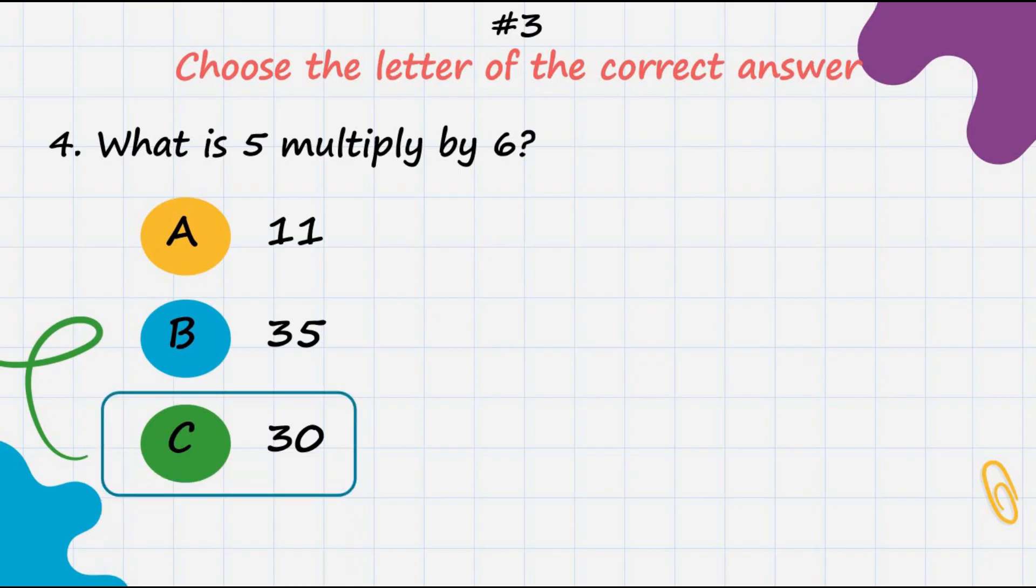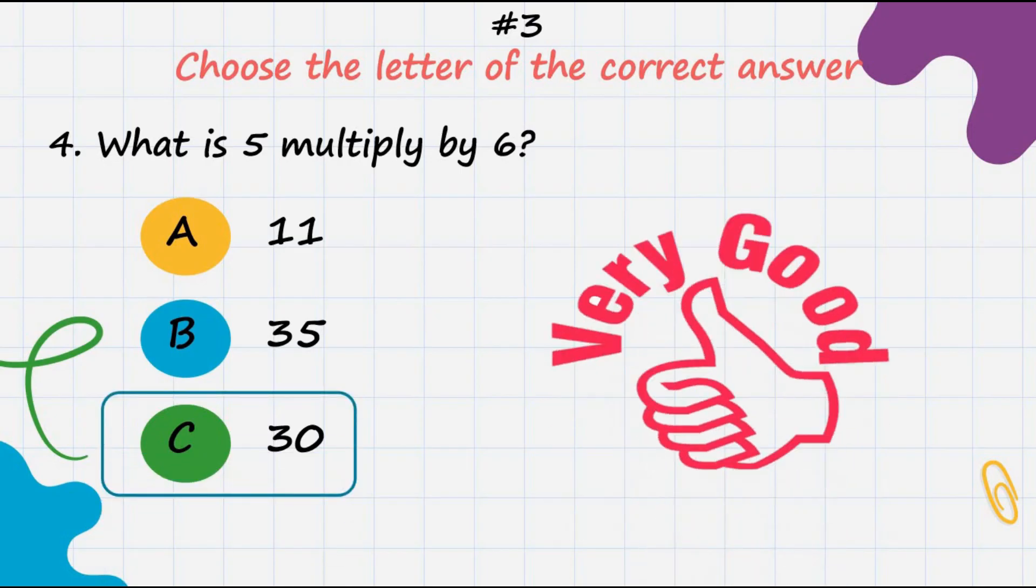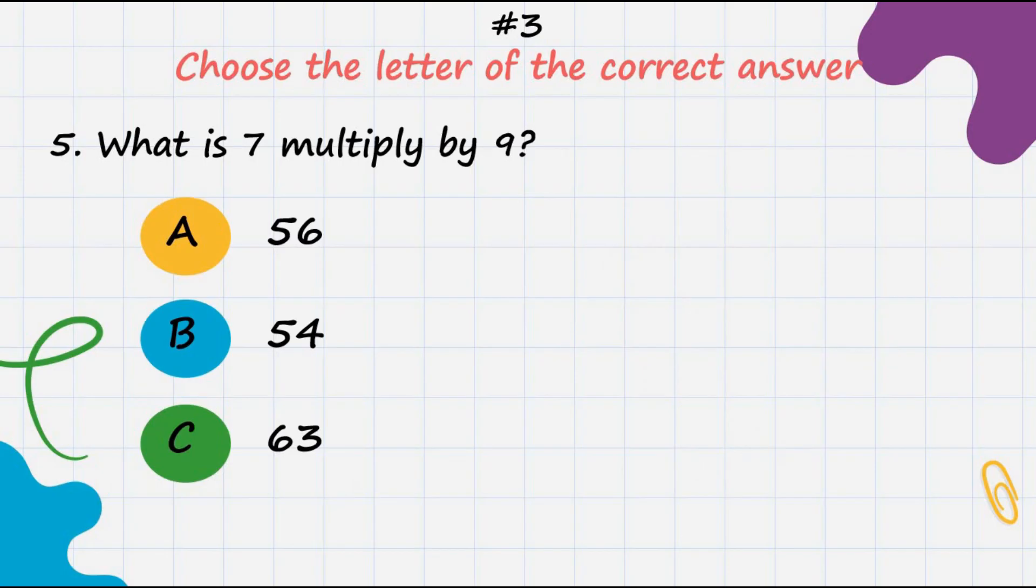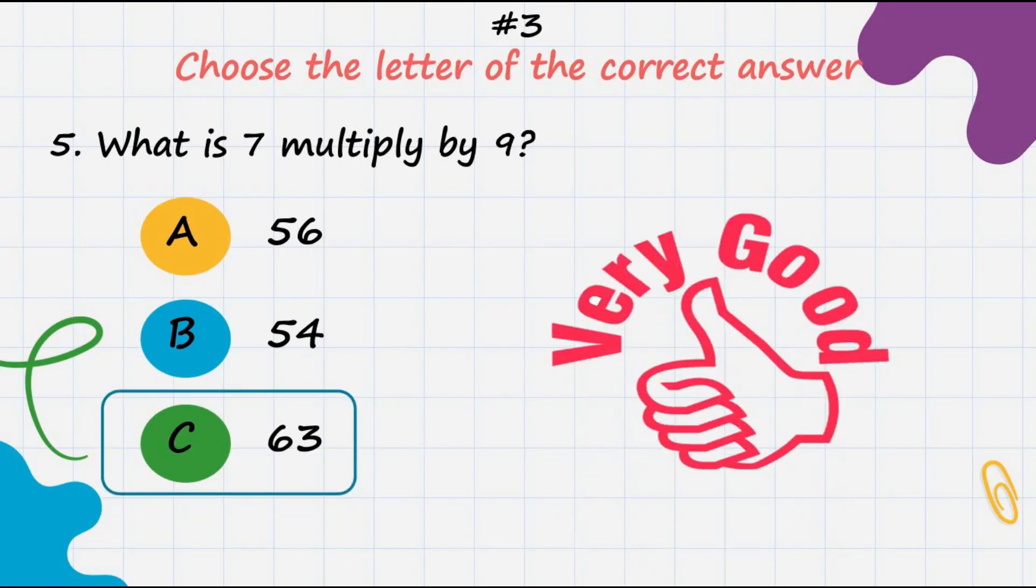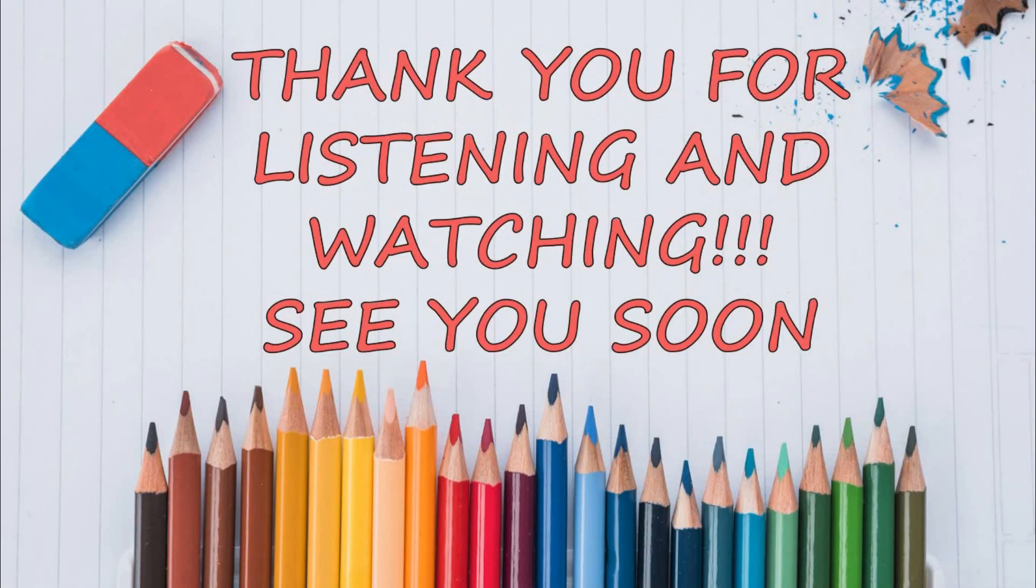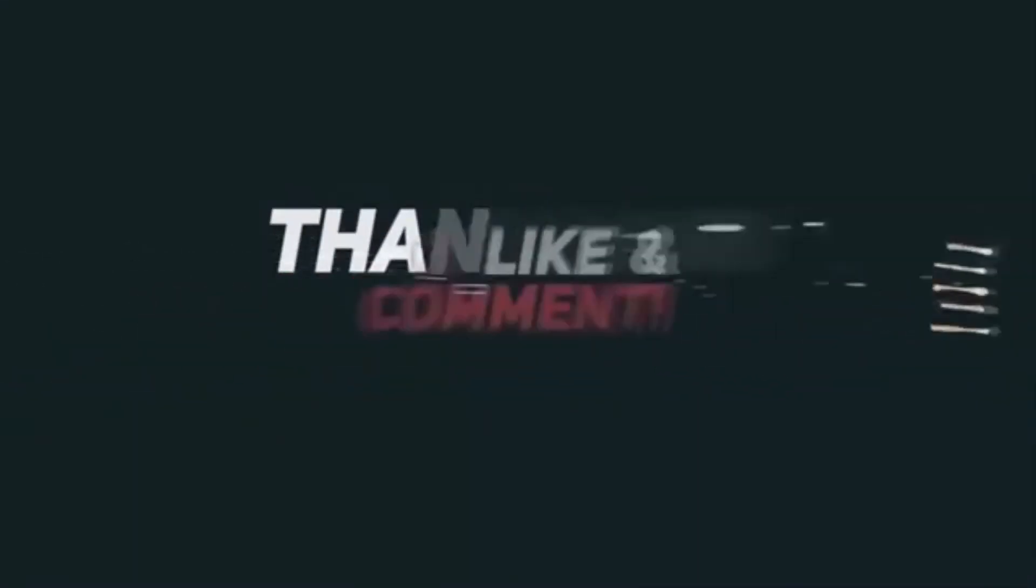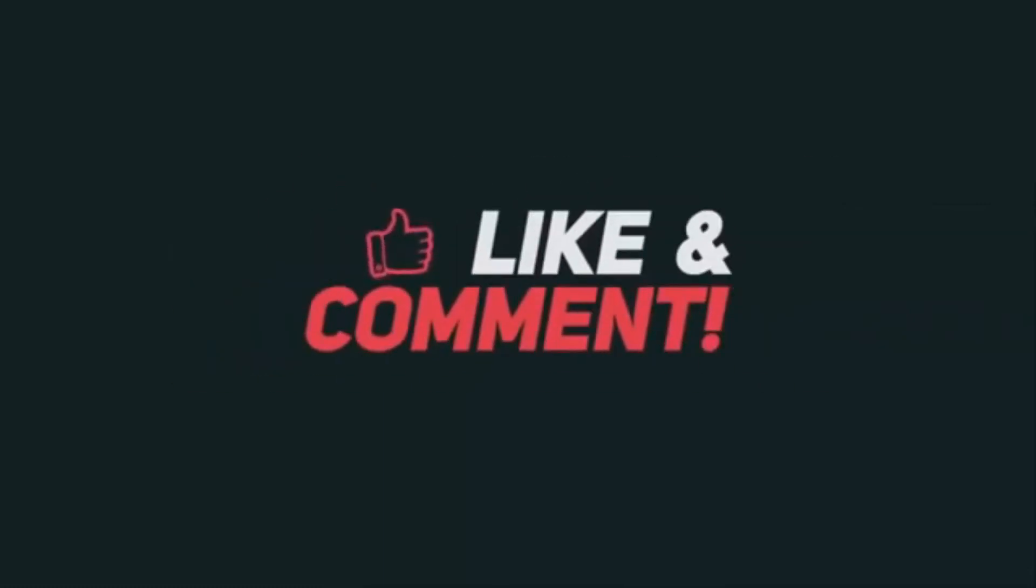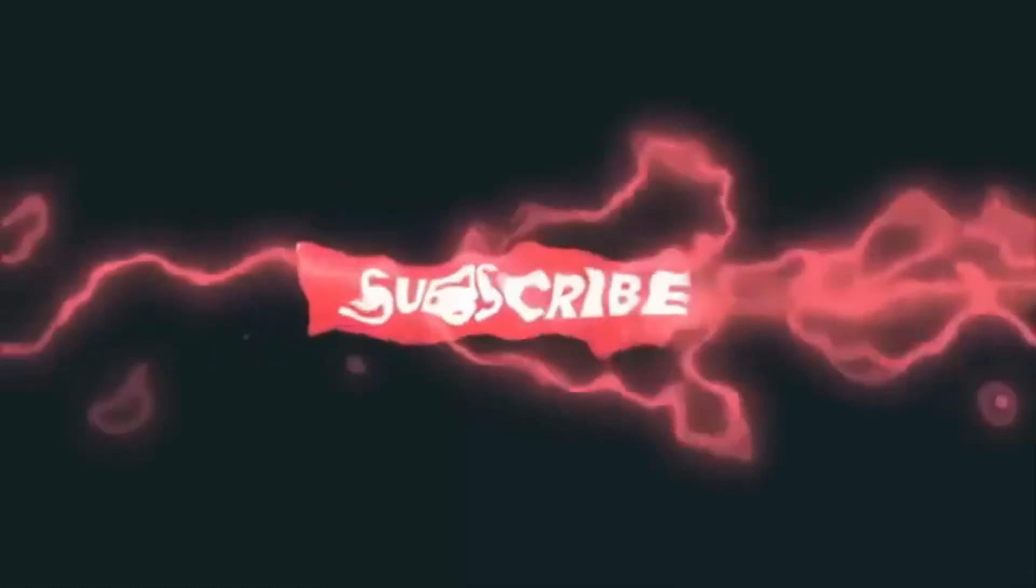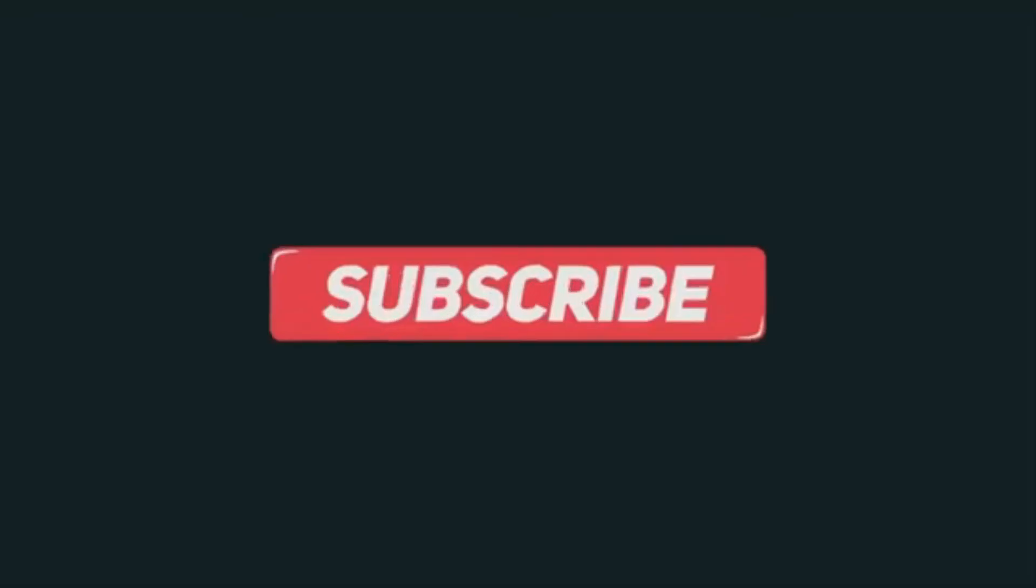Number four: What is 5 multiplied by 6? Yes, very good, it's 30. And for the last number: What is 7 multiplied by 9? Very good, it's 63. Thank you for listening and watching. See you soon.